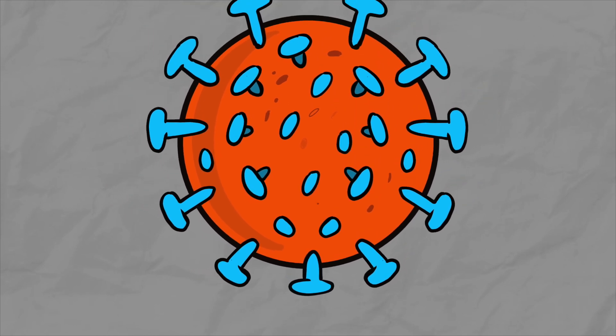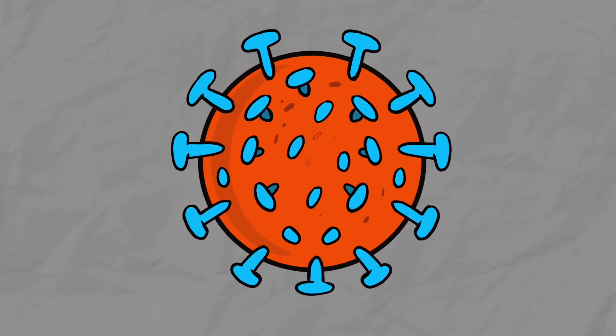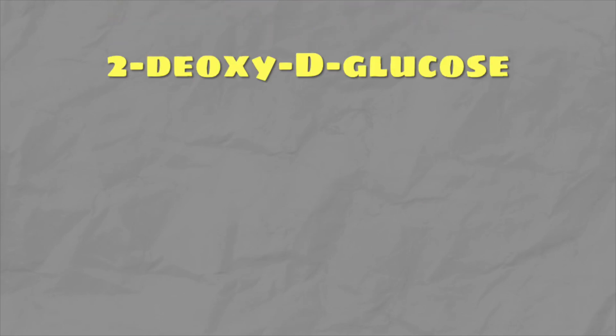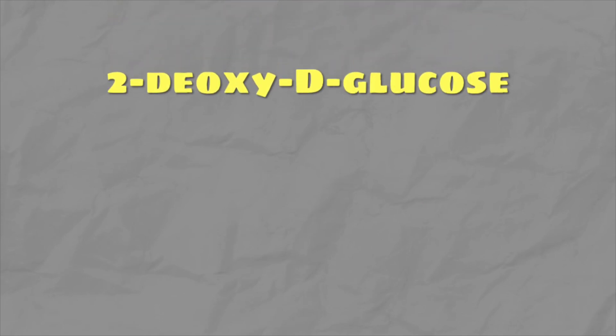According to the latest update, the Drugs Comptroller General of India (DCGI) has granted permission for emergency use of the drug 2-Deoxy-D-Glucose. So let us understand about this anti-COVID-19 therapeutic application of 2-Deoxy-D-Glucose.